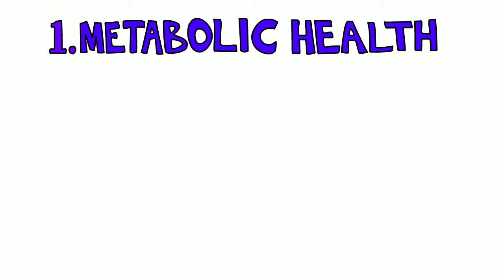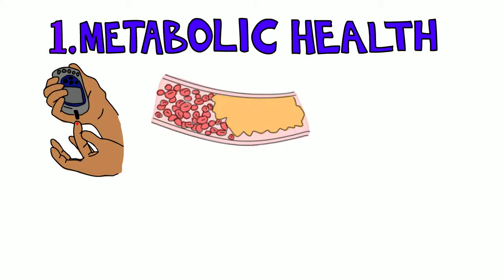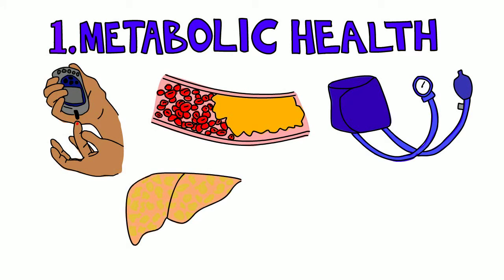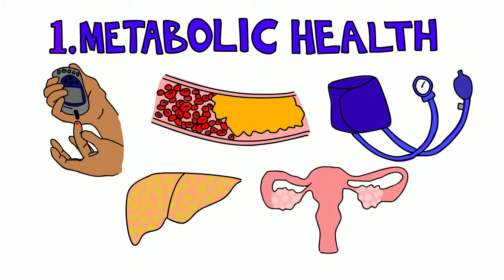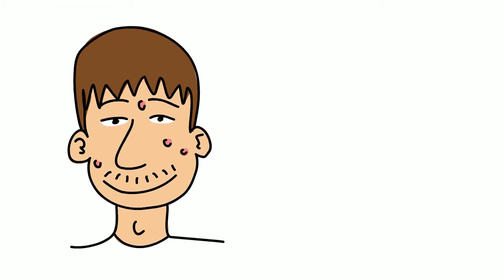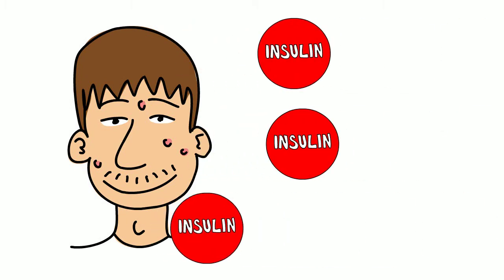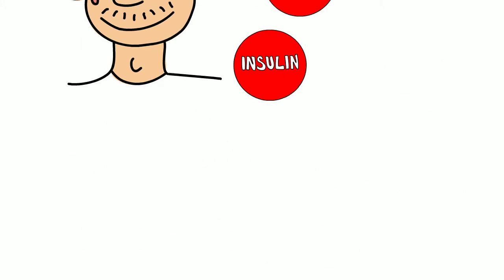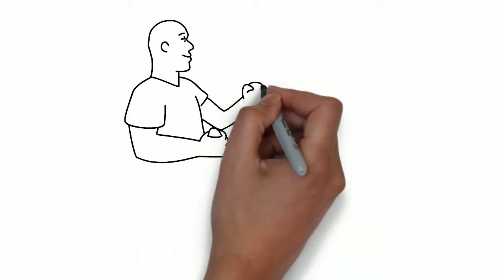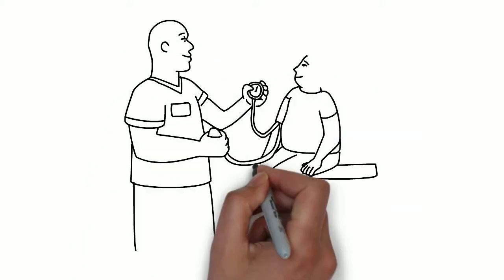Metabolic health issues include type 2 diabetes, dyslipidemia, hypertension, non-alcoholic fatty liver disease, or polycystic ovary syndrome. Metabolic complications are most likely to present during puberty, which is a period of increased insulin resistance. Screening for metabolic complications in those at risk is critical as they are often asymptomatic.